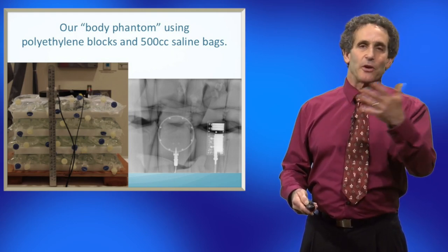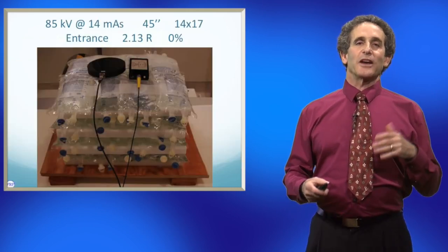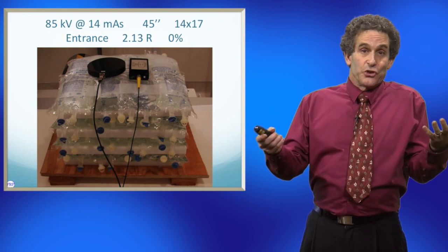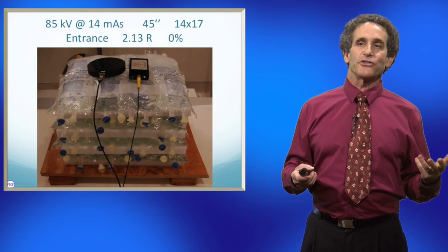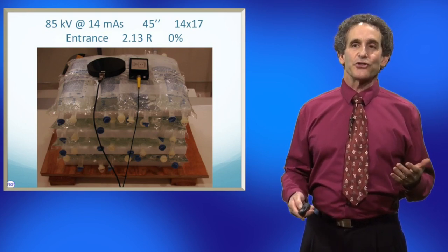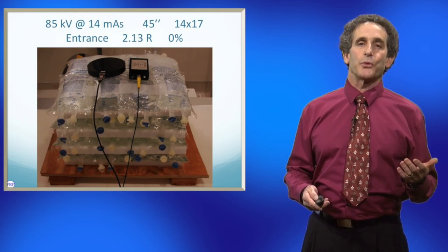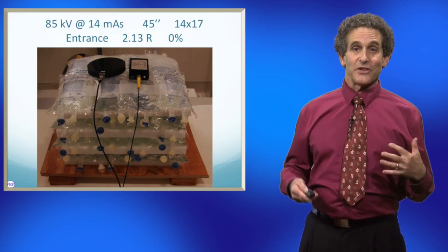There's also the KVP meters up there, but that doesn't really have anything to do with the dose here. So the technique we started with was 85 at 14 mass. It was at 45 inches, it was collimated to 14 by 17, and the entrance dose was 2.13 R. So you can see that's over 2 R was the entrance dose.